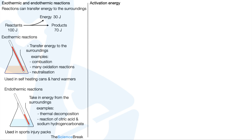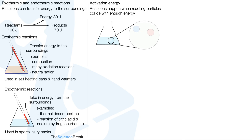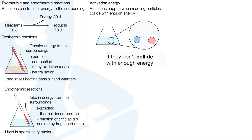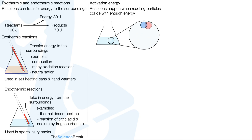Activation energy. Reactions happen when reacting particles collide with enough energy. Here is a flask with the reaction going on, and I've shown two of the reacting particles. If they don't collide with enough energy there will not be a chemical reaction. However, in the second example they have reacted with enough energy so there is a chemical reaction between those particles. The minimum energy needed for particles to react is called the activation energy.